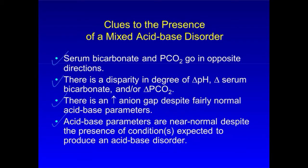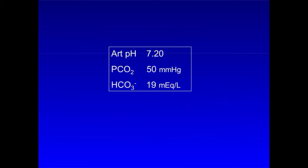So let's look at three examples that will illustrate these points. In the first one, pH is 7.20, PCO2 50, and serum bicarb 19. Note that the PCO2 and bicarb go in opposite directions.